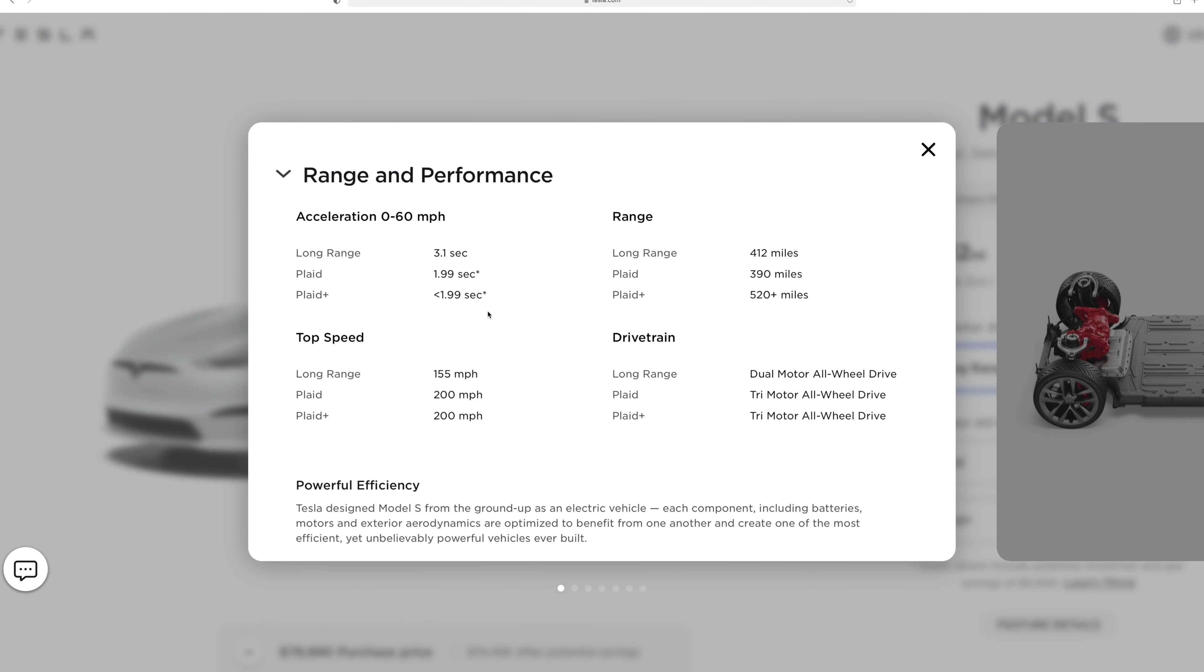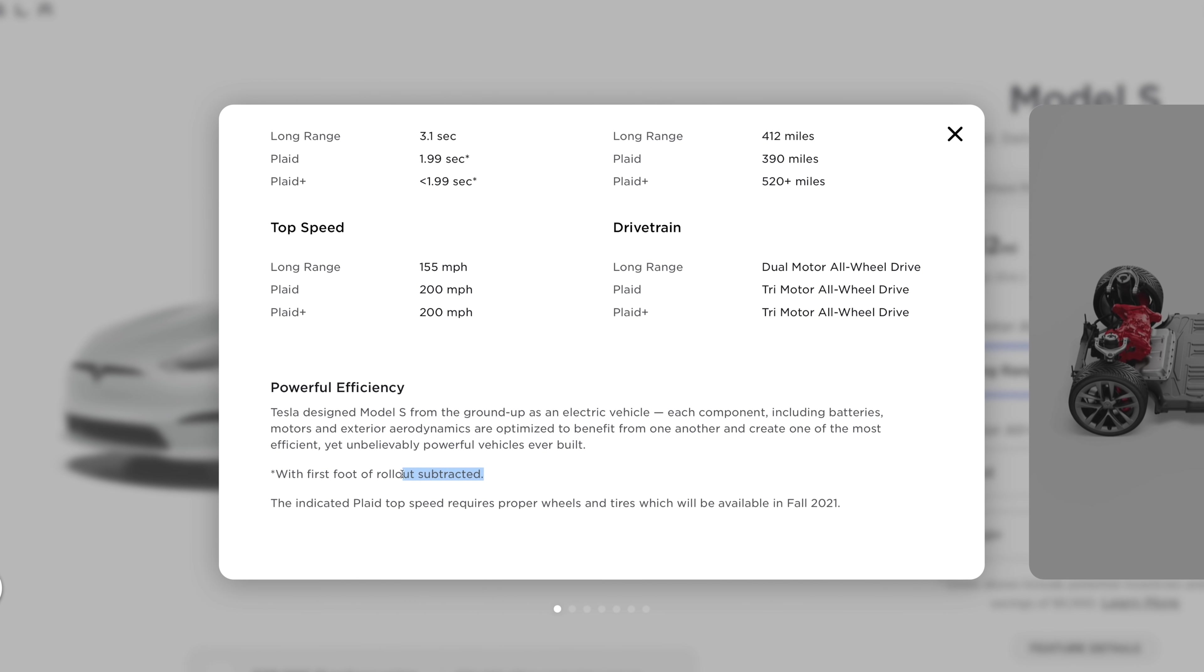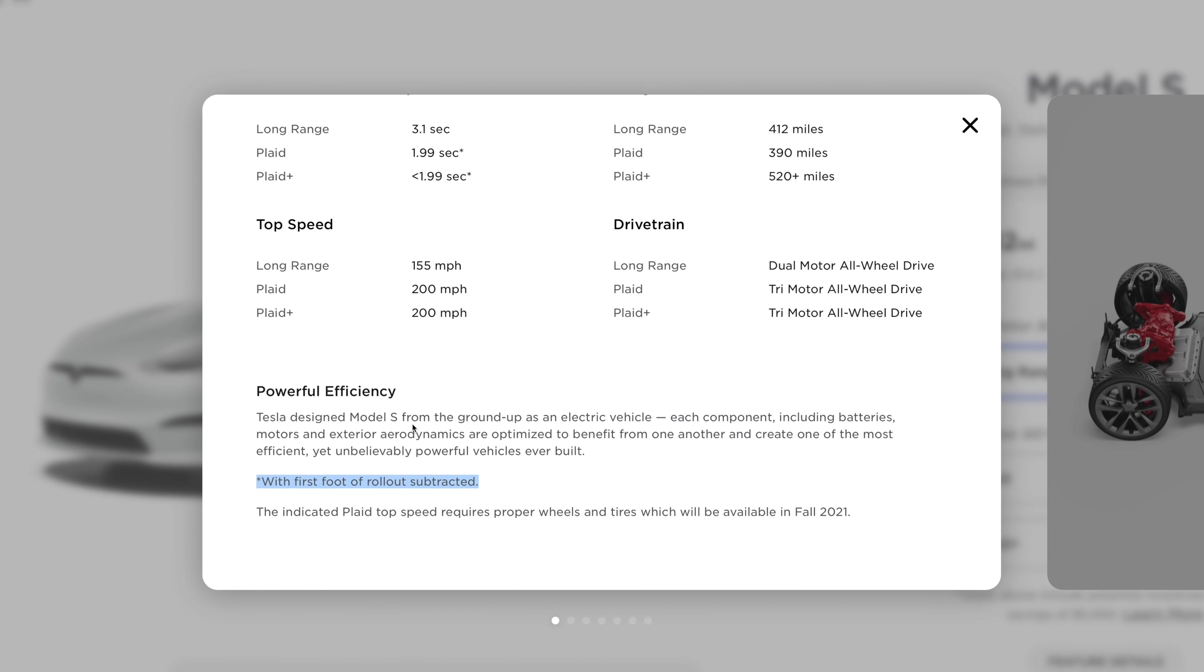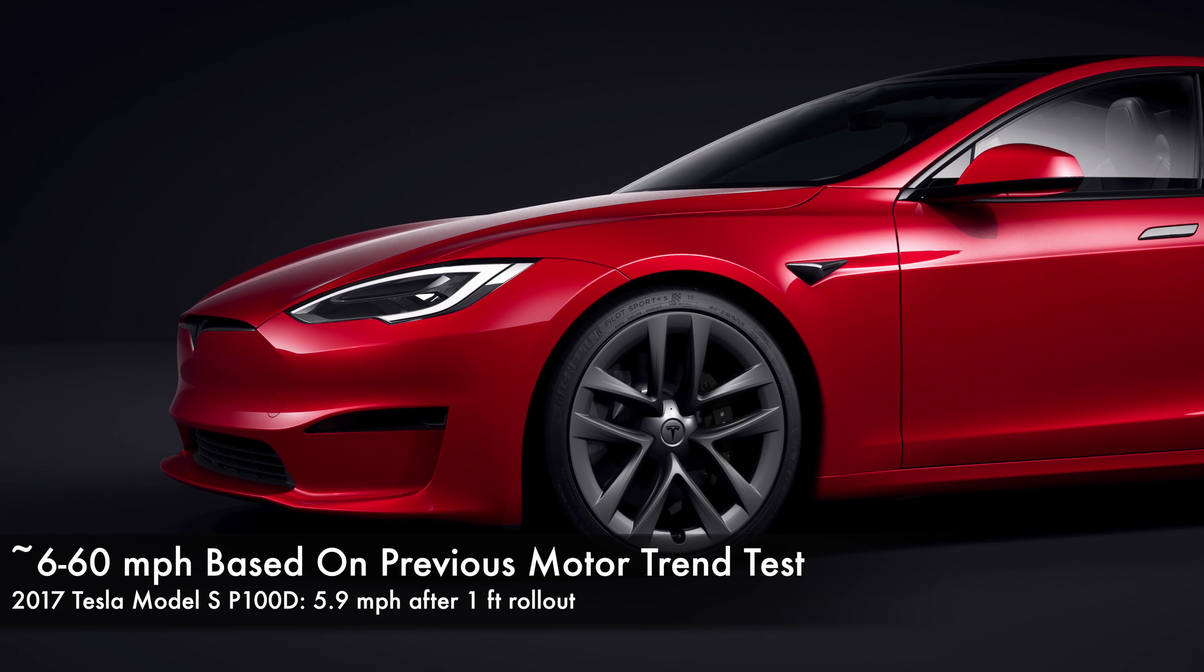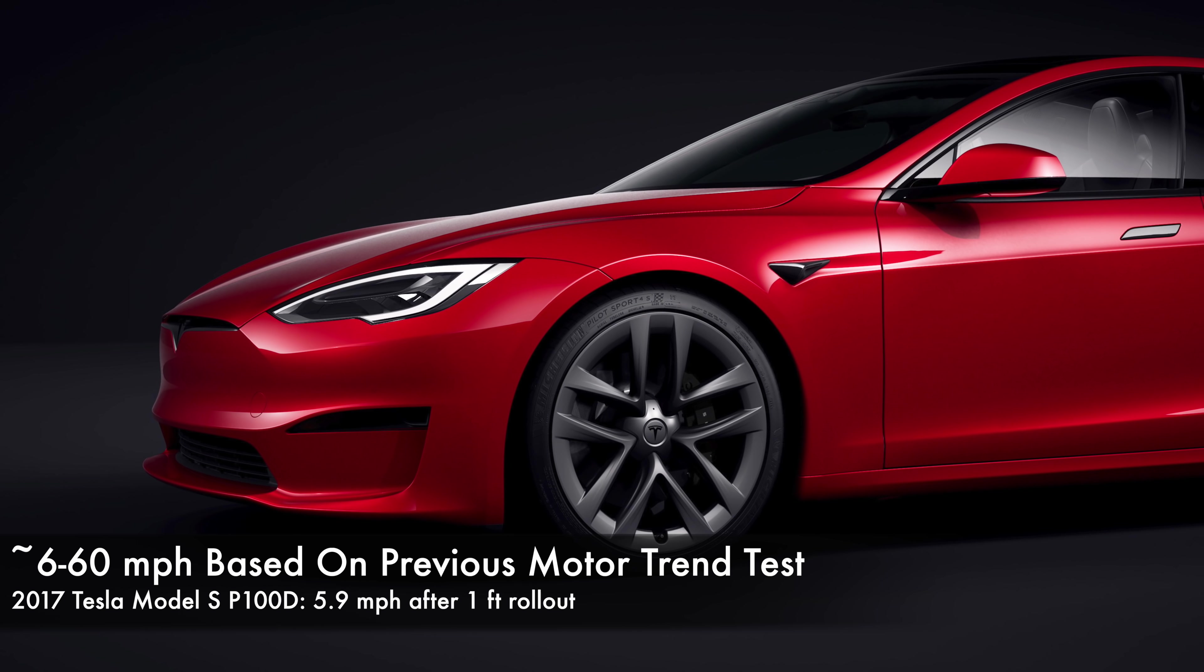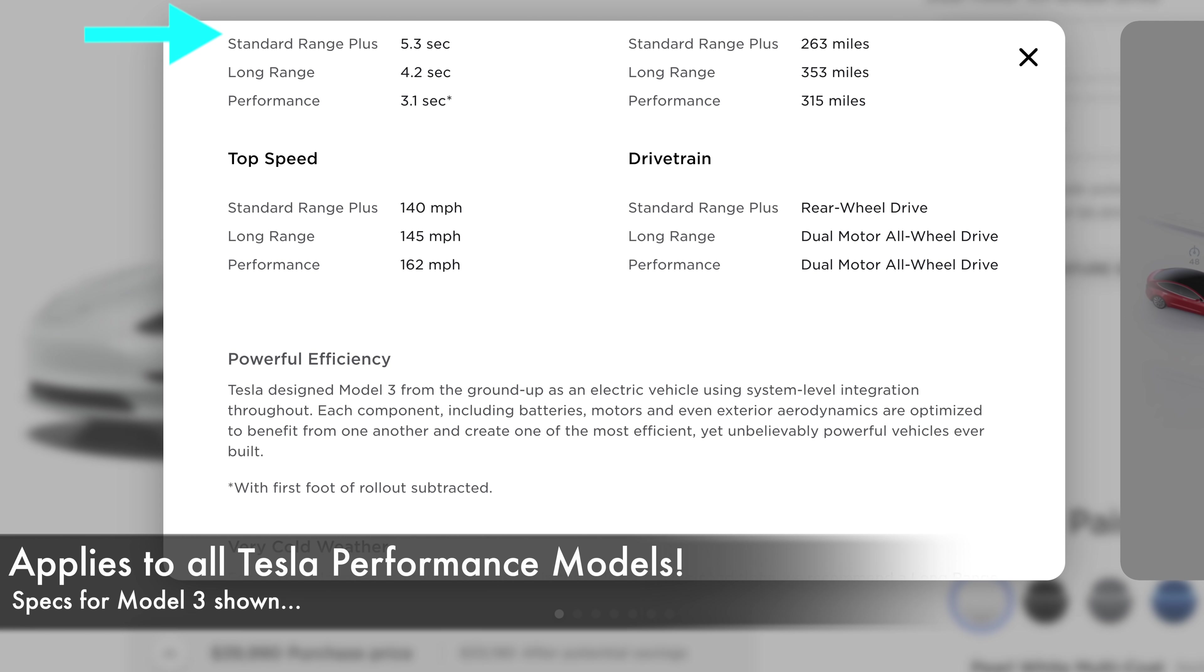The premise of the previous video was that Tesla shadily hides the fact that the only way the Model S Plaid goes from 0-60 in under 2 seconds is if you delete the first foot of acceleration, which makes it more realistically a 6 to 60 mile per hour test, not a 0 to 60 time. Not only that, Tesla only deletes the first foot of acceleration on their fastest models, not the base models, so it's not only misleading but also inconsistent.